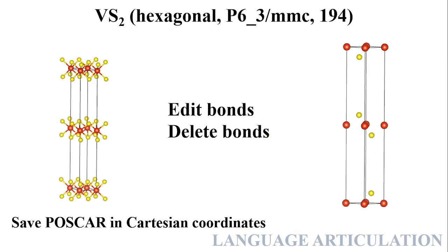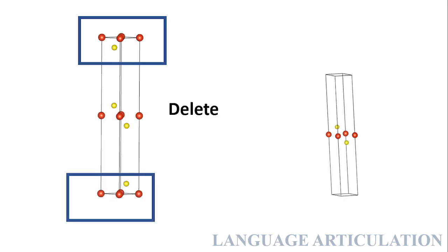In this more complicated case, there are more than two replicas. In this file, you will see in VESTA there are three layers. You have to again edit bonds, delete bonds, and save POSCAR in Cartesian coordinates — that's a simple step. Then you have to delete both replicas, and you will end up with this. But if you save this file in XYZ, VESTA will auto-populate the replica sites.